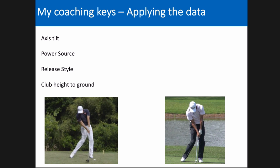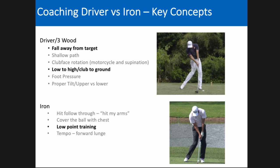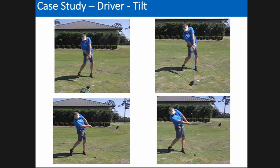Now we're going to get into some case studies and look at some 2D examples so you can relate what you've seen on these graphs to what actually happens with 2D video — the way most of us are used to looking at it. The coaching keys are: axis tilt, power source, release style, and club height to ground. In this presentation we'll look at the fall away from the target — or axis tilt movement — for the driver case study, and for the iron we'll look at low point training.